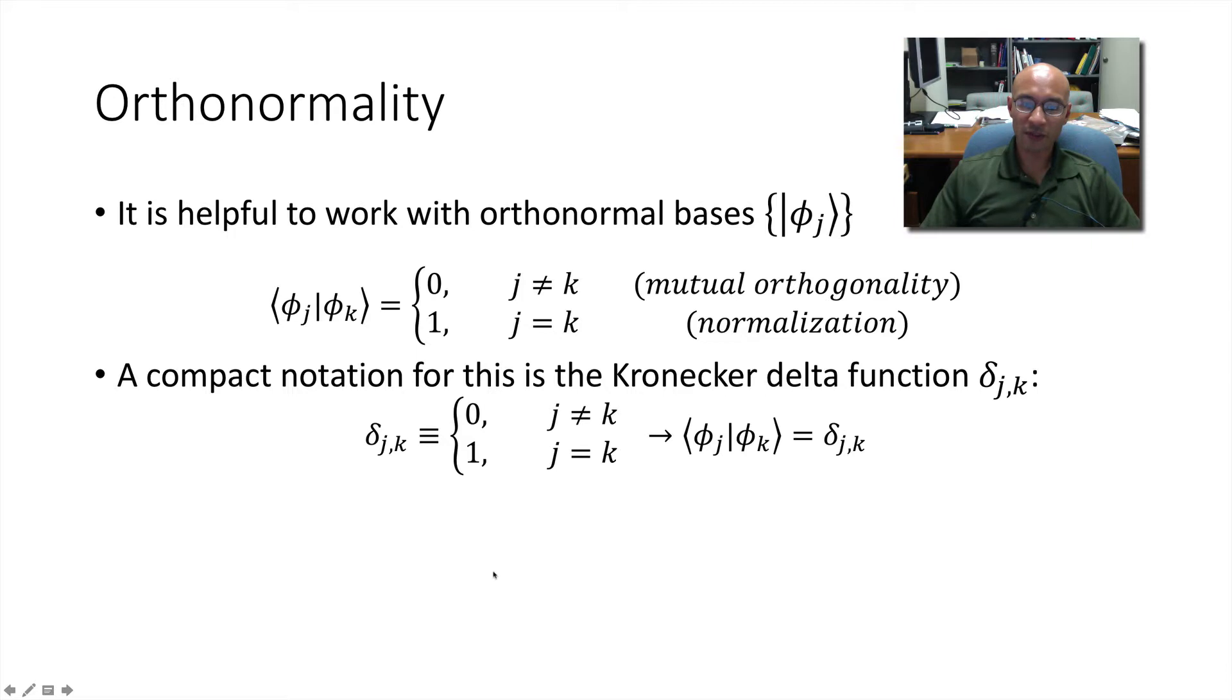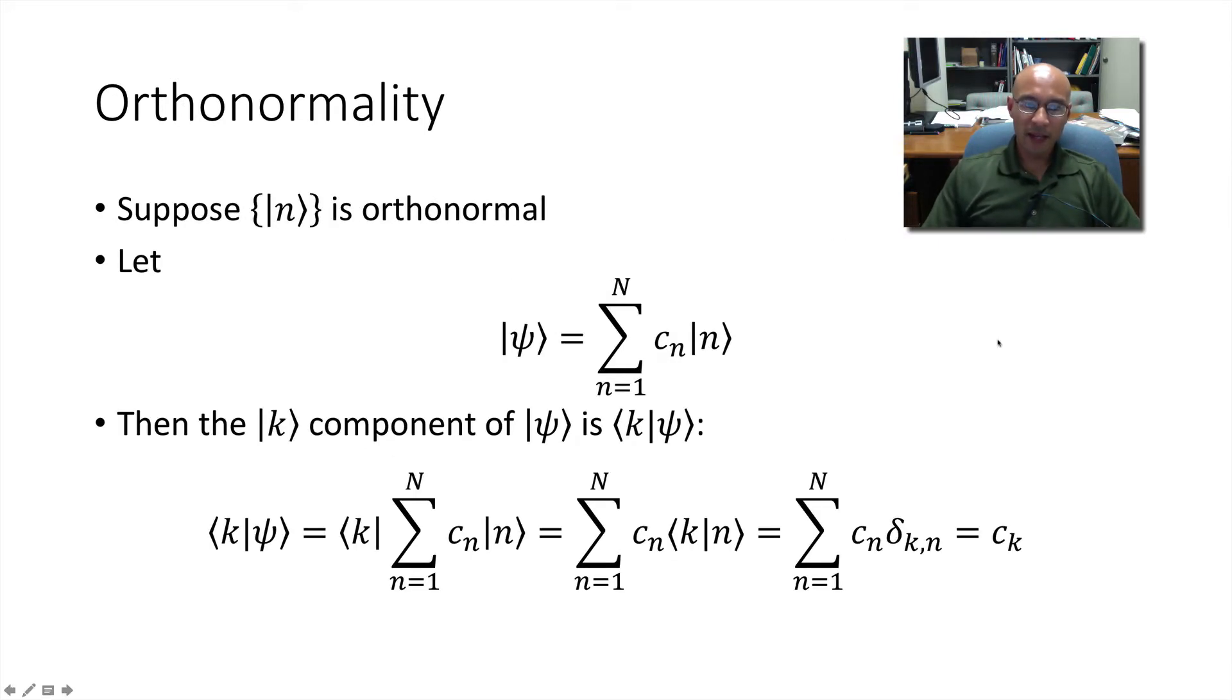A compact notation for this is the Kronecker delta function, which is zero if j is not equal to k. And it's one if j is equal to k. And now let's consider what happens if we have this orthonormal basis, n, and we write psi in this orthonormal basis, so we expand it. And we want to know what the kth component is. Well, we take the kth component of psi to be this inner product, k psi. So k psi looks like this. We apply the bra.